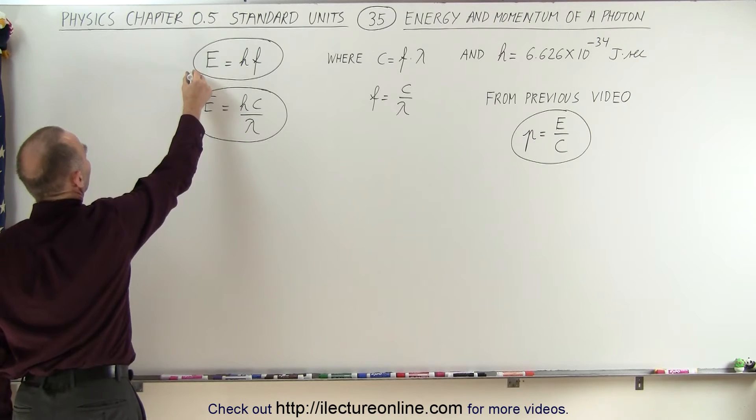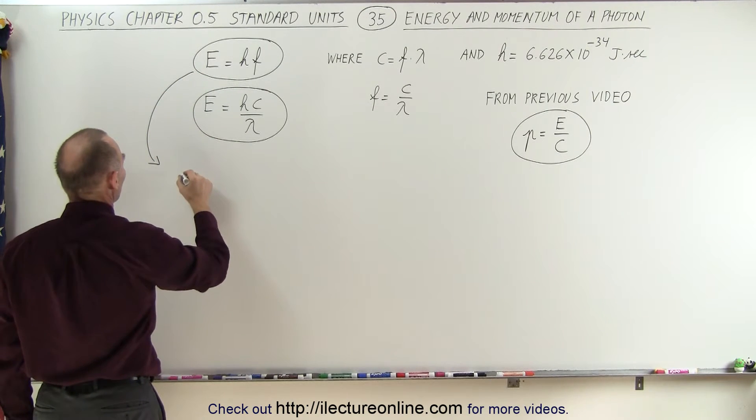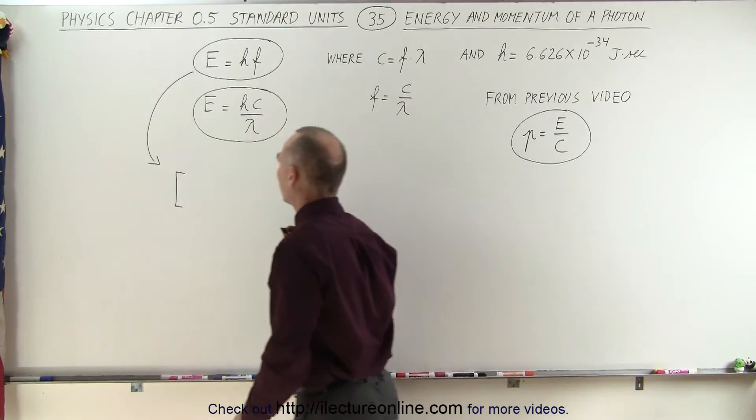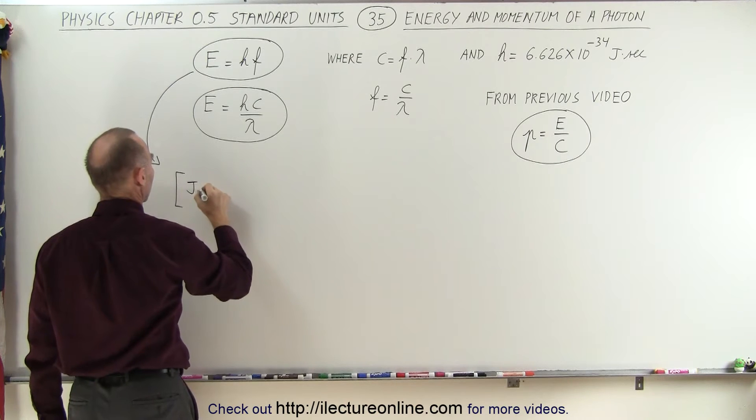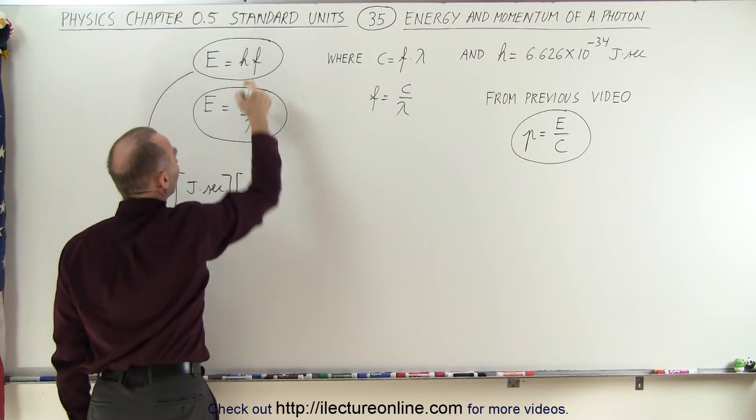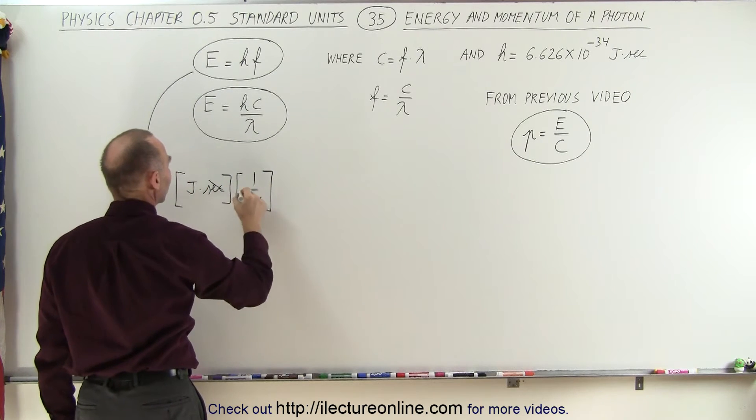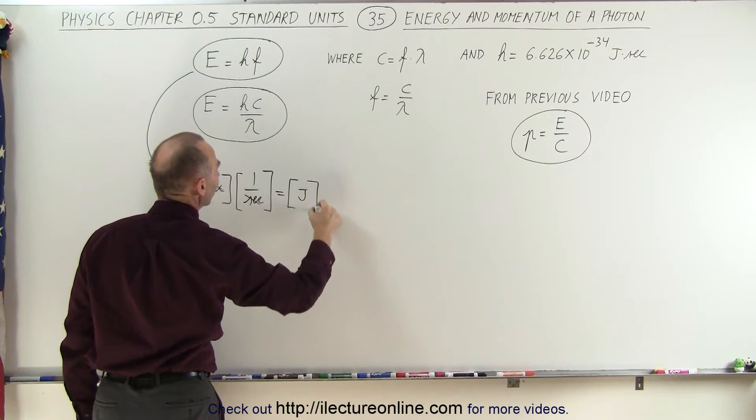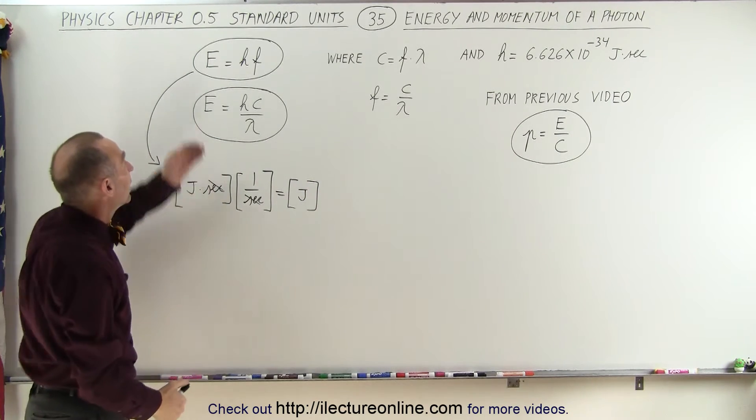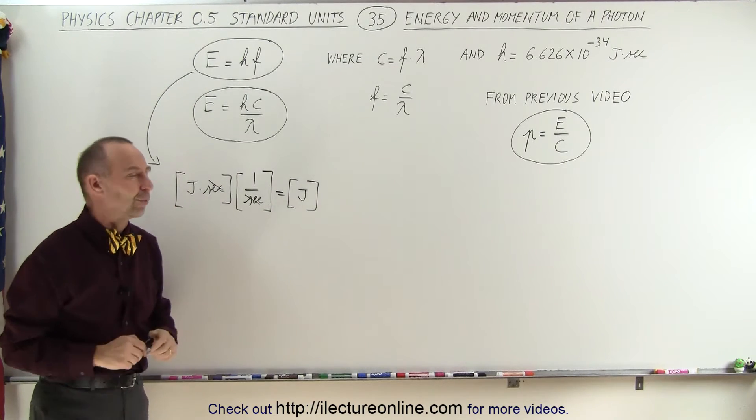So let's start with energy being equal to h times f. We have the units for h, which is equal to joules times seconds by definition. And then we multiply that times the frequency, which is 1 over seconds. Right away you can see that the seconds cancel. And sure enough, that does indeed give us the units for energy. So E equals h times f makes sense because it gives you the units for energy.